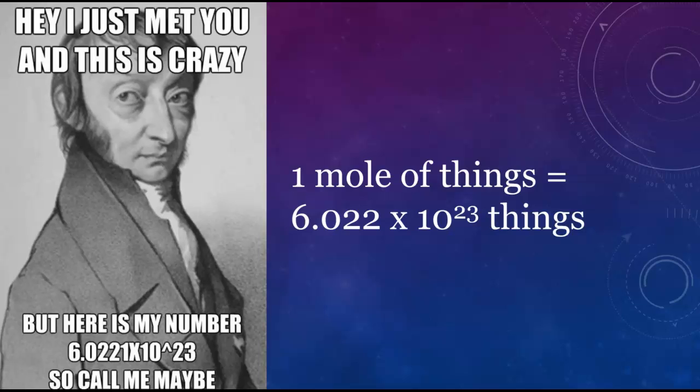Atoms are ridiculously tiny, and we can't count a dozen atoms because they're too small. But it turns out that 6.022 times 10 to the 23rd power is enough atoms that we can sort of count them.